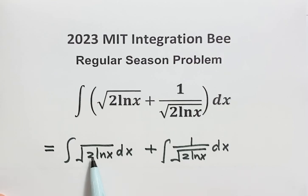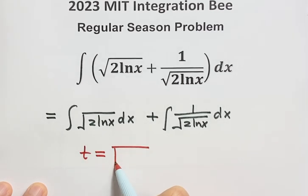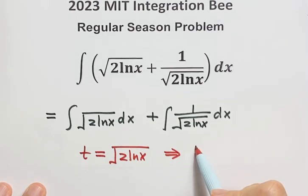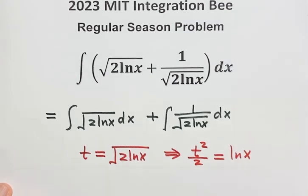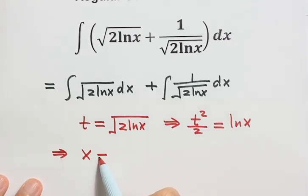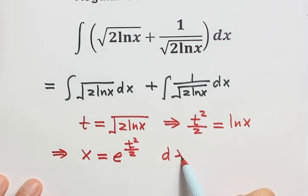Because here we have square root of 2 log x, we're going to set a new variable t equals this term, equals the square root of 2 log x. Then solve for x: square both sides, divide both sides by 2, so t squared over 2 equals log x. Solving for x gives x equals e to the power t squared over 2. Taking the derivative of both sides, dx equals d of e to the power t squared over 2.